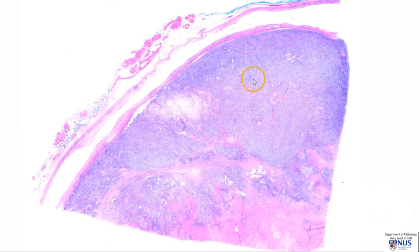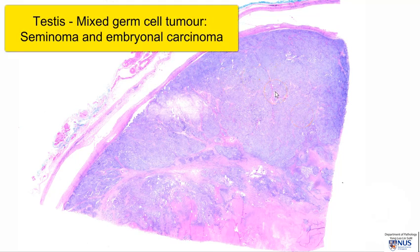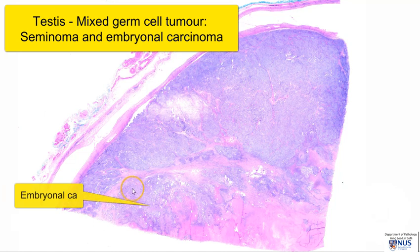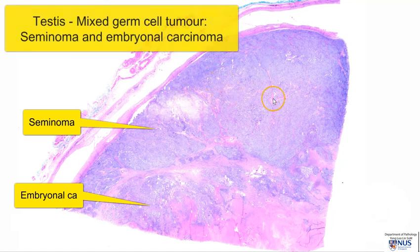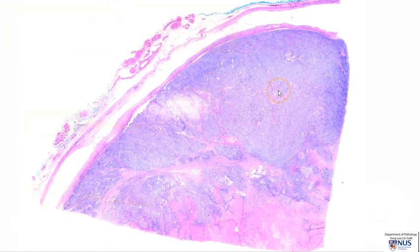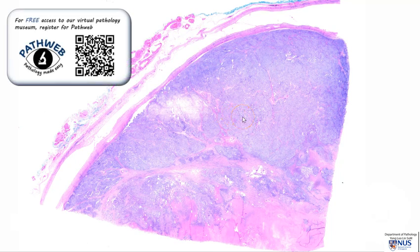This is a virtual microscopy slide of the testis from a case of a mixed germ cell tumor with two components: an embryonal carcinoma component, which I will focus on, and a seminoma component. There is a separate video describing microscopic features of seminoma in this YouTube channel as well as in our free online pathology resource, PathWeb, and the registration link is in the video description.